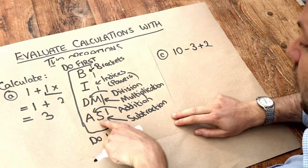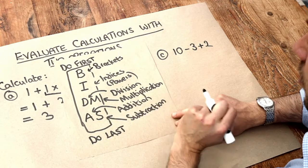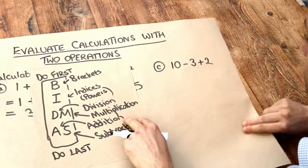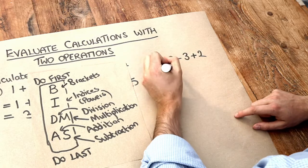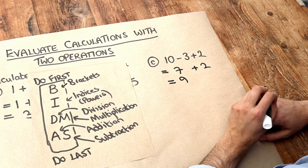Now when you have two operators which are on the same level, then you just do it left to right. So we do 10 minus 3 first, which is equal to 7, and then we add the 2, and we end up with 9.